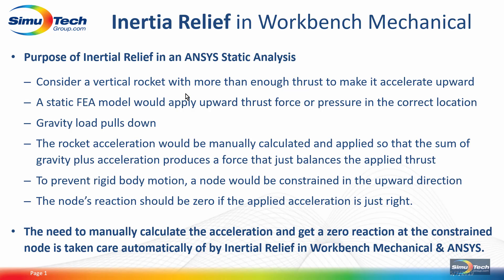As a simple example, consider a vertical rocket that has more than enough thrust to lift it off the Earth and make it accelerate upward toward the sky. If you create a static FEA model, you could apply an upward thrust force or a pressure in the correct direction on that model that will cause it to accelerate upward. You have to overcome gravity load as well.